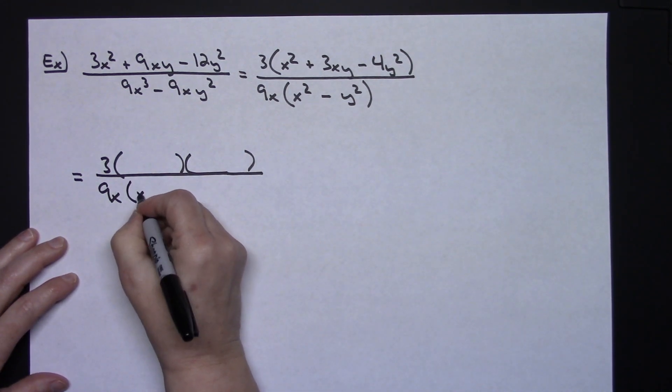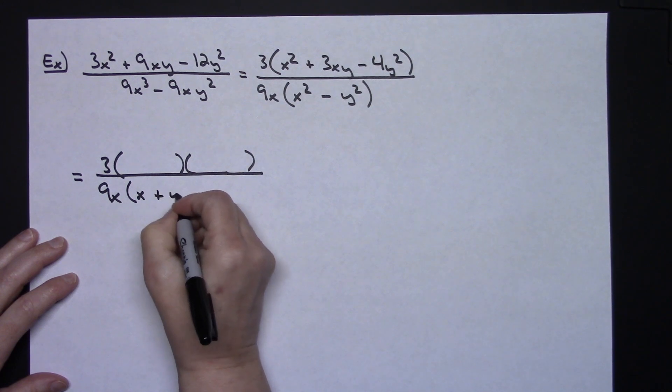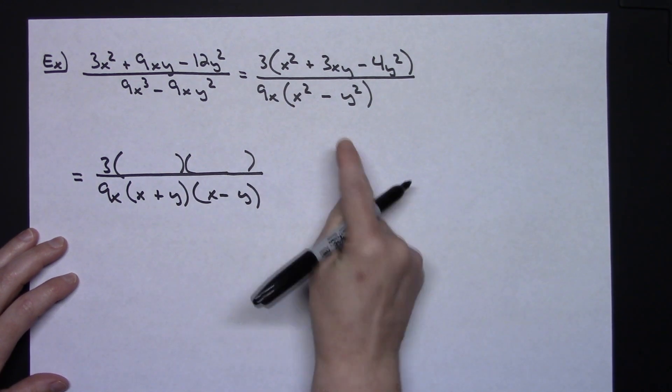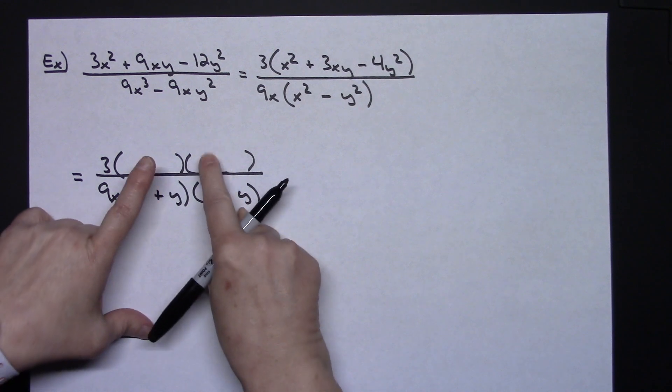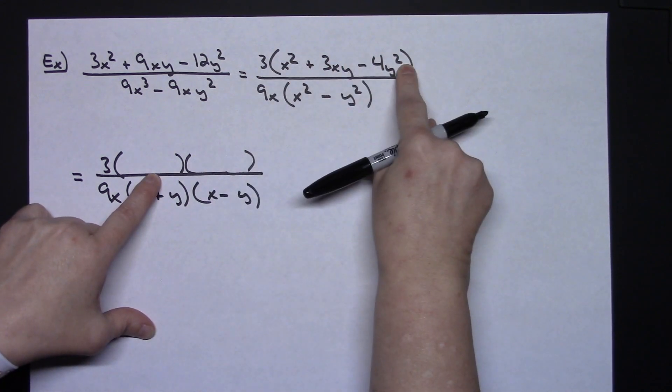Now since this is the difference of two squares and it goes really easy here let's go ahead and factor that into an x plus y and an x minus y. That difference of two squares right there.